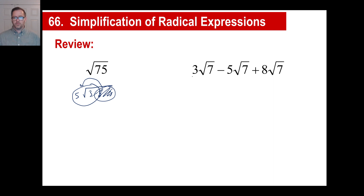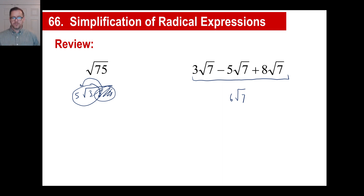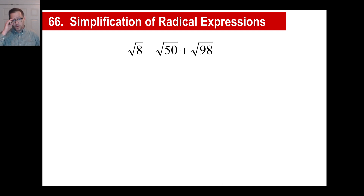The other thing we need to review is this: remember how to do these from last time — you just treat those just like like terms, x's or y's or whatever. You got 3 of something, you got negative 5 of something, that's negative 2 of something, plus 8 of something gives you 6 of that something. And you probably guessed that what we're going to do today is combine both of these types of exercises into one kind of problem.